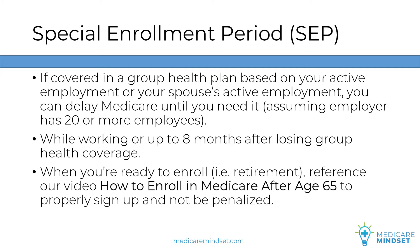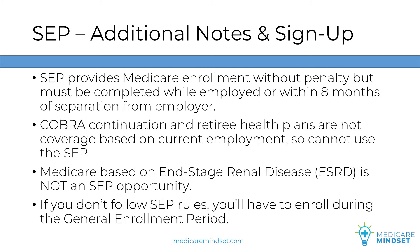Watch our video, How to Enroll in Medicare After Age 65, for guidance on how to properly complete the enrollment and not be penalized. The video will be linked in the description at the end of this video. This can all be done without penalty because of your continuous coverage through a group health plan since age 65, based on the active employment of you or your spouse. But after eight months of separation from the employer, your SEP ends and you cannot enroll in Medicare again until the General Enrollment Period.